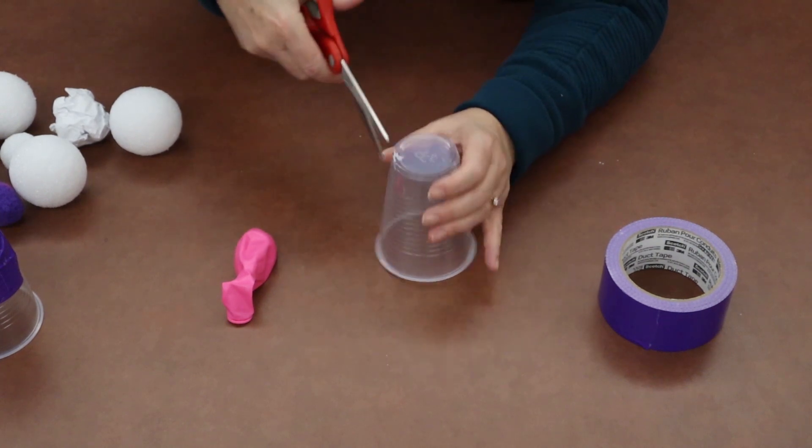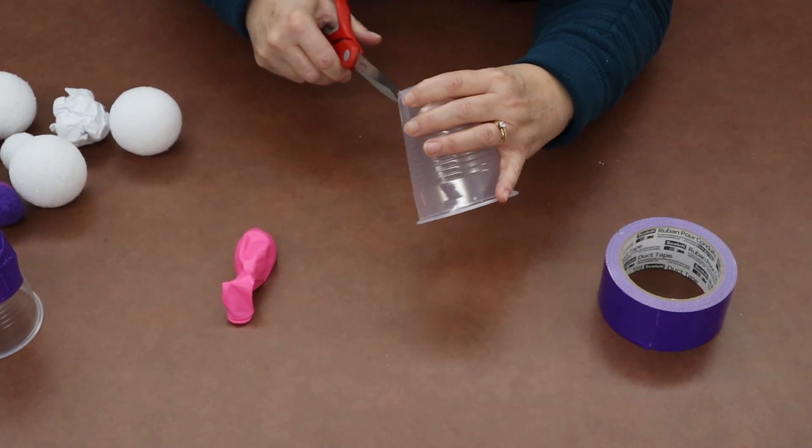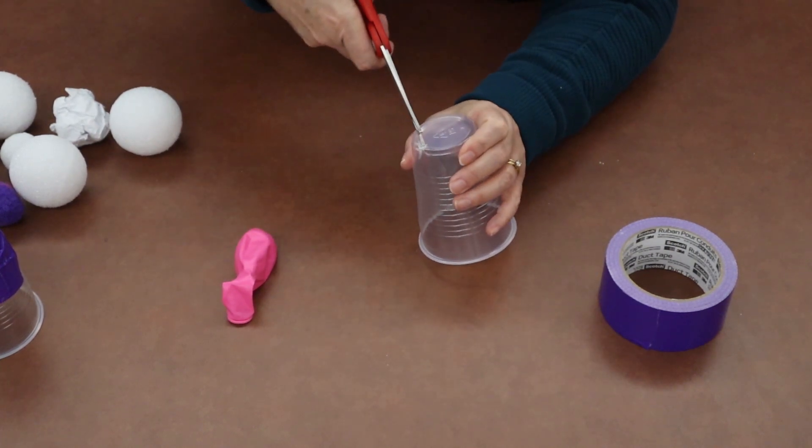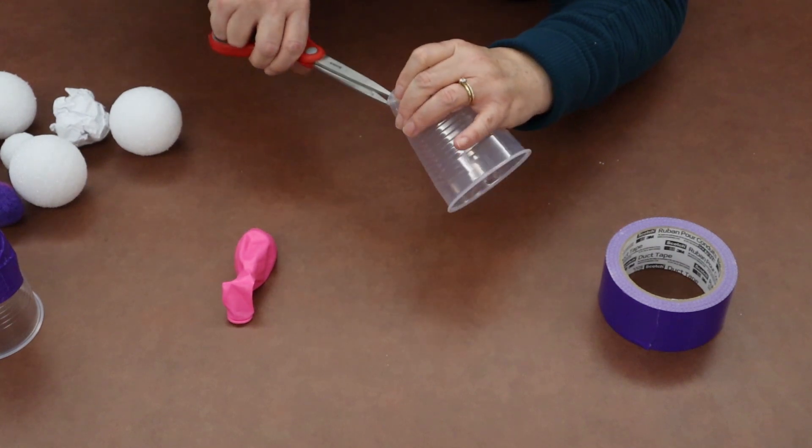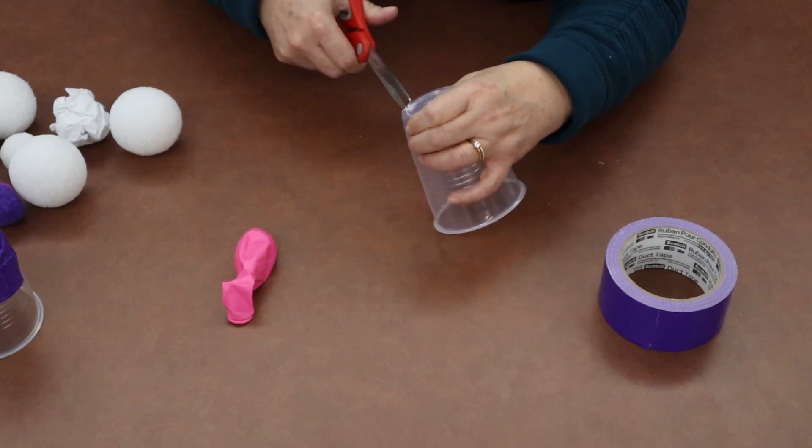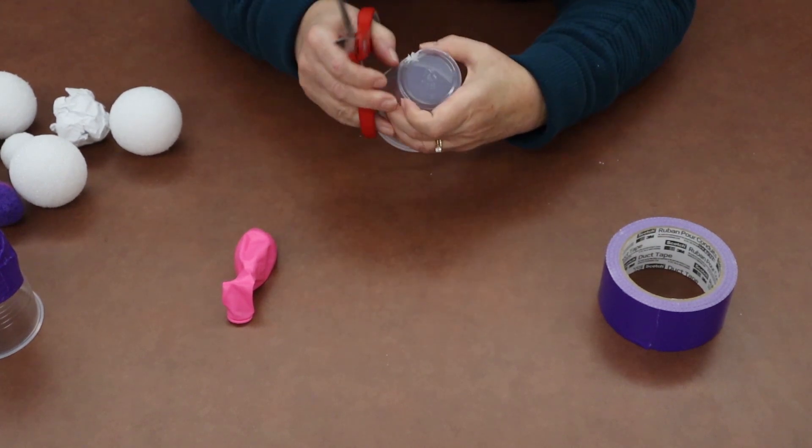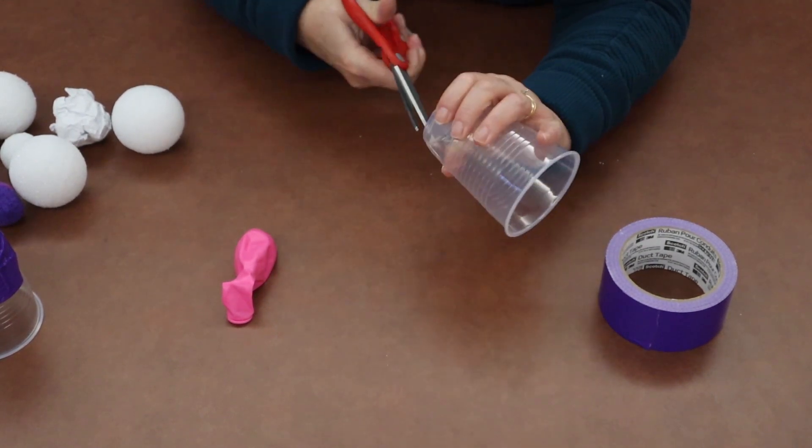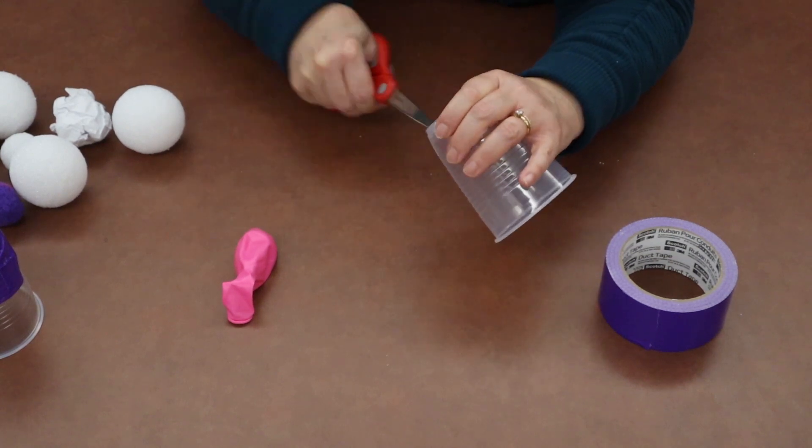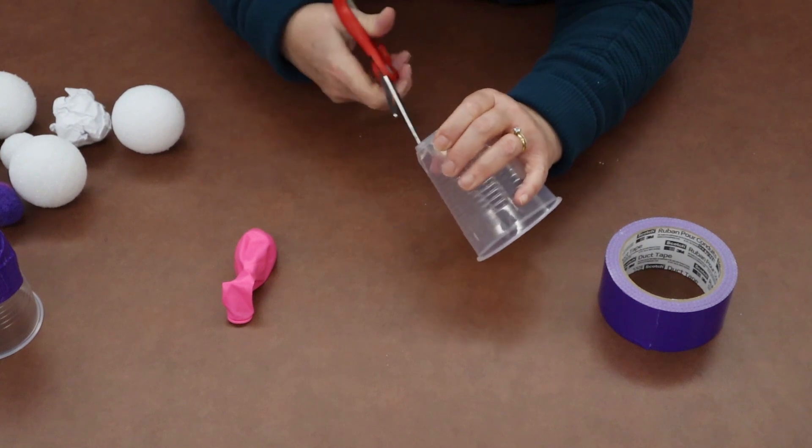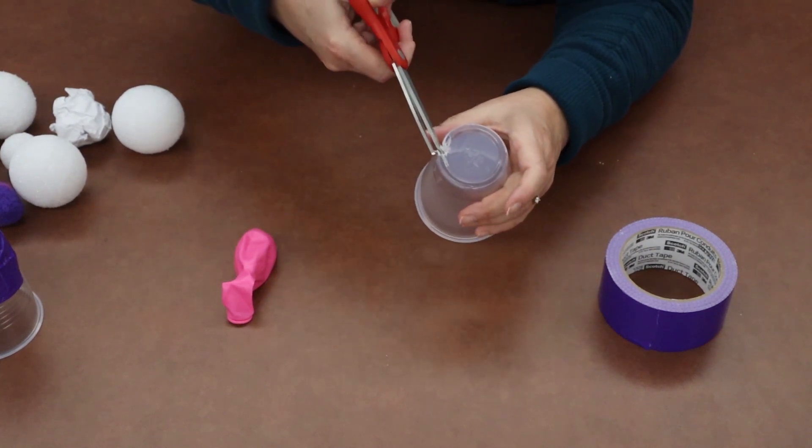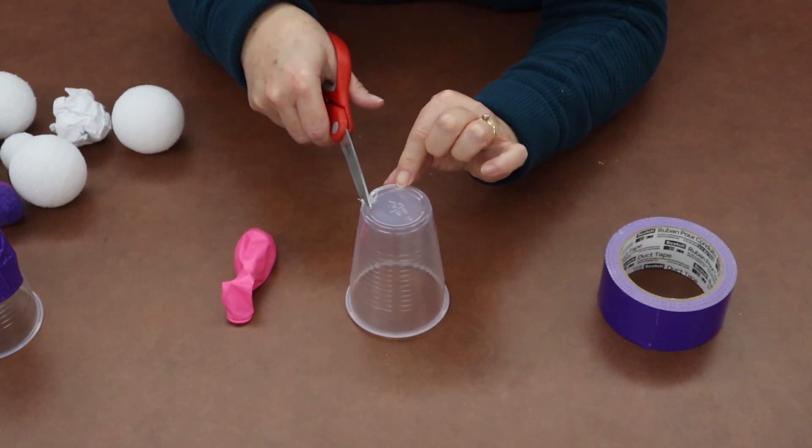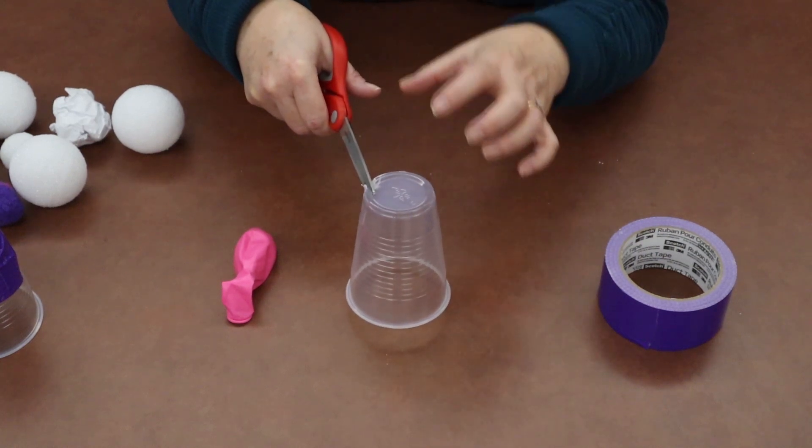And it will take a second and you might have to do a little section at a time until you get a spot where you can get cutting. And sometimes your scissors make a difference too. I'm getting there. All right, I think I got it. So I've got a hole that I can get into to cut around the cup and it's best if you leave a little bit of the edge uncut so that it will give more support to your shooter.